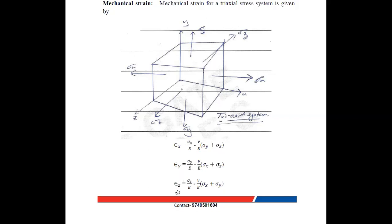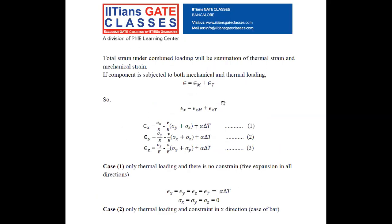Similarly, we can write epsilon y and epsilon z. The total strain due to combined loading is the summation of thermal strain and mechanical strain: total strain epsilon = epsilon_m + epsilon_t. So total strain in the x direction is mechanical strain in x plus thermal strain in x: epsilon x = sigma x / E − (nu / E)(sigma y + sigma z) + alpha·ΔT. Equations 1, 2, and 3 give total strain in x, y, and z directions respectively.